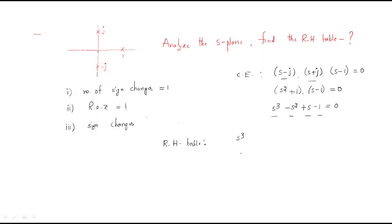Now we draw the RH table. The maximum power is s³, then s², s¹, and s⁰. Filling in the coefficients: for s³ we have 1 and 1; for s² we have −1 and −1; for s¹ we compute: (−1)(1) + (1)(1) = 0 directly, giving us a row of zeros.